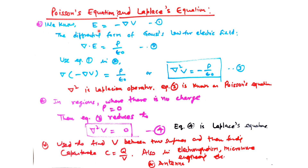We know that the electric field is related with the potential as E equal to minus del V, and the differential form of Gauss's law is del dot E equal to rho by epsilon naught. If we put equation 1 into this, then del dot (minus del V) equals rho by epsilon naught, or del squared V equal to minus rho by epsilon naught. The del squared is the Laplacian operator and this equation is known as the Poisson equation.